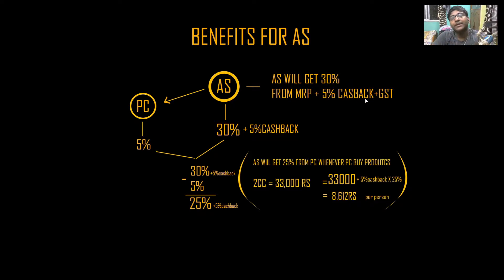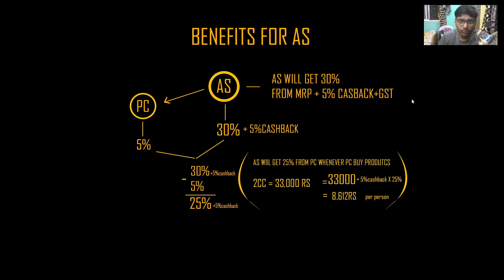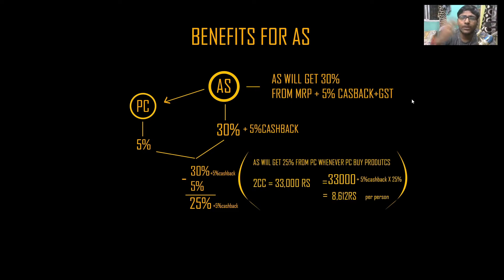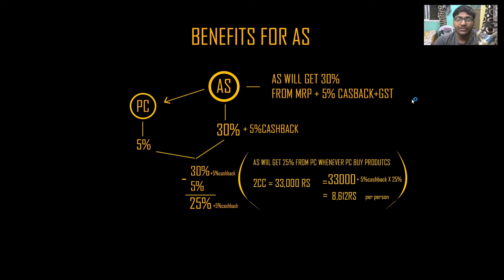The cashback spelling might be wrong, but don't focus on that. So there is a 5% cashback to your account. Means, if you buy a product worth 1000 rupees, you will get 30% off — that's 300 rupees off — so the product comes to 700 rupees. Plus, 5% cashback on 700 rupees which will be 35 rupees, going to your bank account.